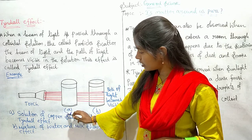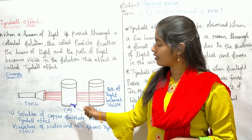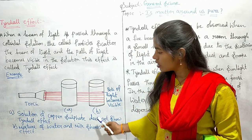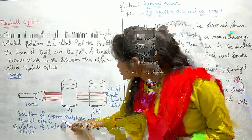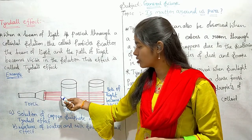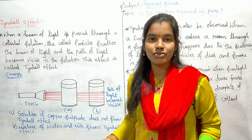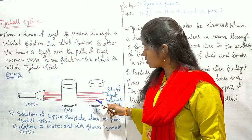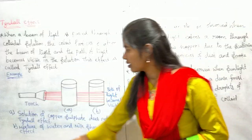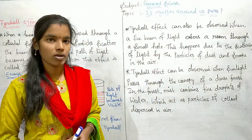For this example, we take two beakers. In the first beaker we take copper sulphate solution and in the second one we take a mixture of water and milk. You can observe that the copper sulphate solution does not show any Tyndall effect — it is not scattering any light passed through it, so the path of light is not visible. But in the case of the second beaker, the path of light becomes visible — it shows Tyndall effect. The mixture of water and milk shows Tyndall effect because it scatters the light.